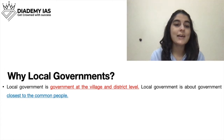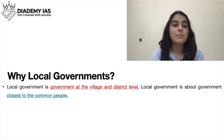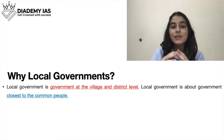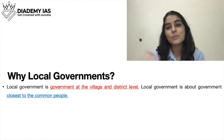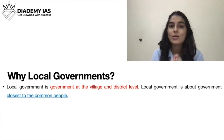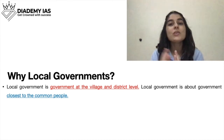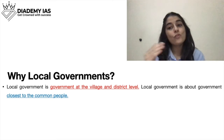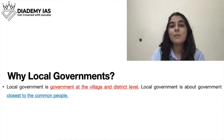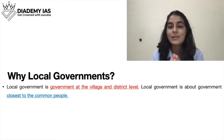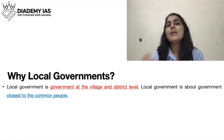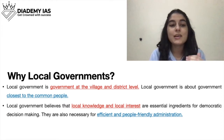Local government is government at the village and district levels — it is the government closest to the common people. In villages, people may not know much about MPs and MLAs, but their connection is more with local governments because they are closer. MPs and MLAs are not always available, but this level of government is there all the time. That is why this government is the closest to the common people.